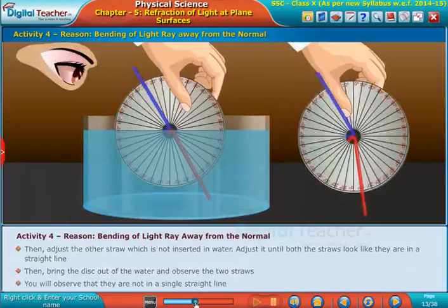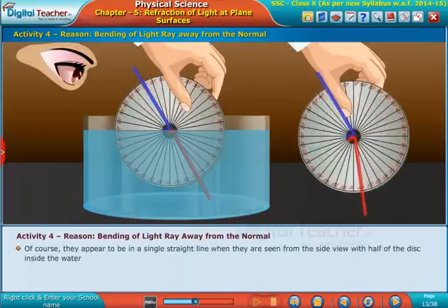Of course, they appear to be in a single straight line when they are seen from the side view with half of the disc inside the water.